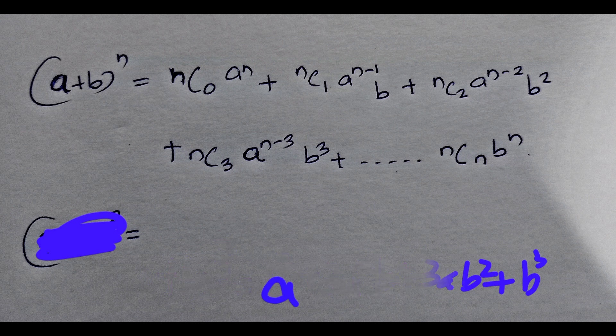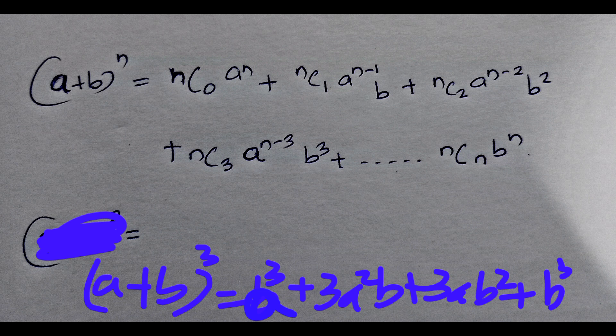For A plus B the whole cube: NC0 into A to the power N, plus NC1 into A to the power N minus 1 into B. Here N is 3, so NC1 is 3C1 equals 3, and A to the power N minus 1 is A squared. So we get 3A squared into B. Plus NC2 into A to the power N minus 2 into B squared, which gives 3AB squared. Plus B cubed.